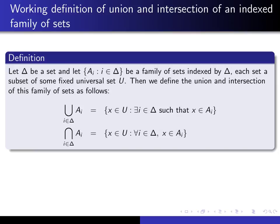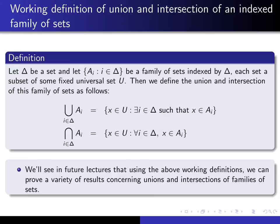Now that we understand what we mean by an indexed family of sets, let's give ourselves a generic indexed family where delta is the indexing set. The union of all the sets in this family is the set of all X in our universal set such that there exists an index I in delta such that X is an element of A sub I. And the intersection of all the sets is the set of all X such that for every I in our indexing set delta, X is an element of A sub I. In future lectures, we'll use these two working definitions to prove a great variety of results concerning unions and intersections of families of sets.